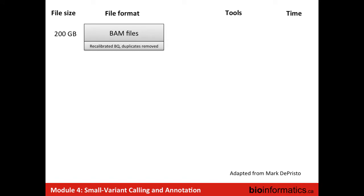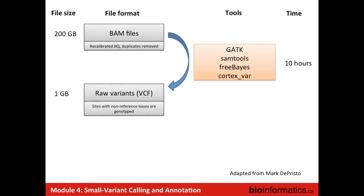When we do variant calling we start from BAM files. Usually variant calling is not a very big task — it's around 10 hours if you use several callers — and it will reduce your data a lot. You end up with around a gigabyte of data for all your variants for a whole genome analysis.